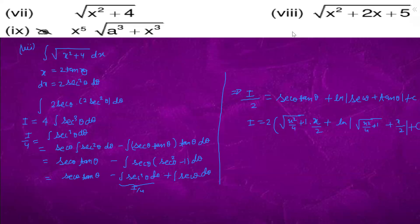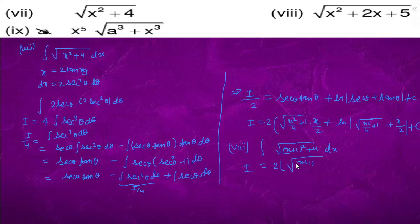This is the answer for question 7. Now for question 8, we have the integration of √((x+1)² + 4) dx. This has the same form as question 7, so in place of x we replace with x + 1.